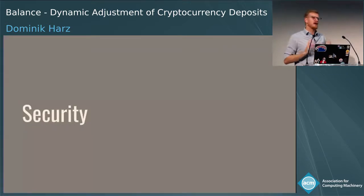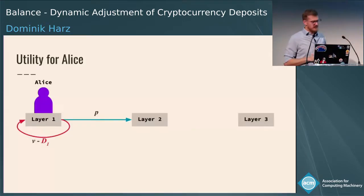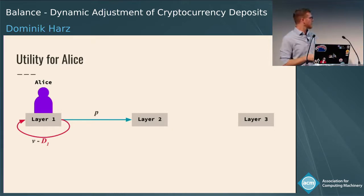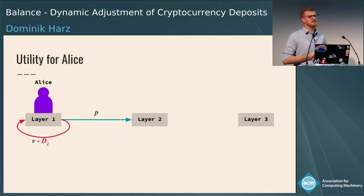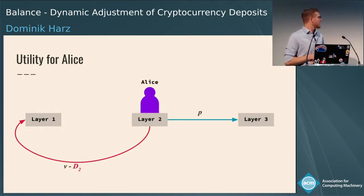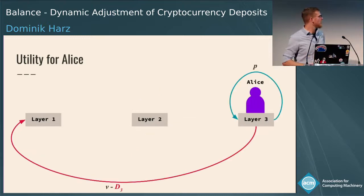To understand security, we look at utilities and payoffs. If Alice is in layer one, she chooses between the desired action (getting payment P) and the undesired action (getting her private value minus the deposit D1). If she moves to the next layer after a desired action, she faces the same decision but with a slightly lower penalty since her deposit is reduced. At the topmost layer, she can continuously get paid for desired actions or be punished with a lower collateral if she misbehaves.